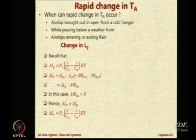So therefore, net lift will change. It will become 1 upon T_A2 minus 1 upon T_A1. Now what will happen? Will it reduce or increase if you go to a cold place?